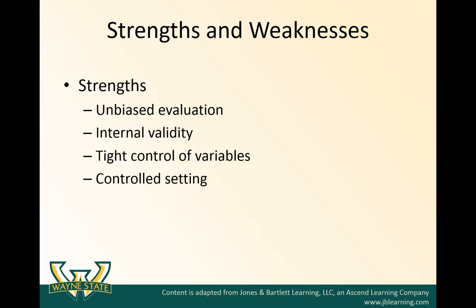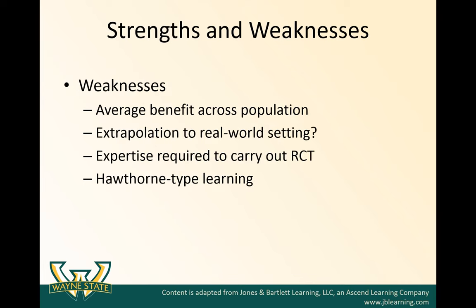There are many strengths and weaknesses of randomized controlled trials. Strengths include unbiased evaluation, internal validity, and tight control of variables. However, some of these strengths can also be weaknesses — because the trial is so controlled and includes a very specific group through inclusion and exclusion criteria, it may not extrapolate well to the real-world setting. Expertise is required to carry out an RCT, requiring many people with different skills. There's also the Hawthorne effect — the fact that people are part of a research study might alter their behavior, further limiting real-world applicability.